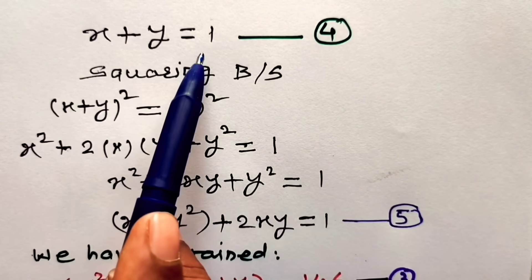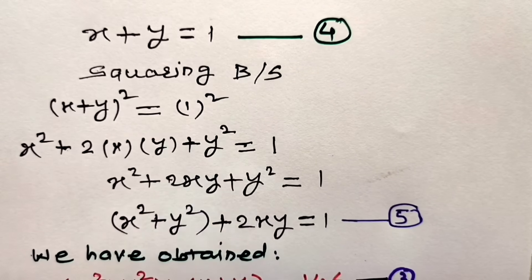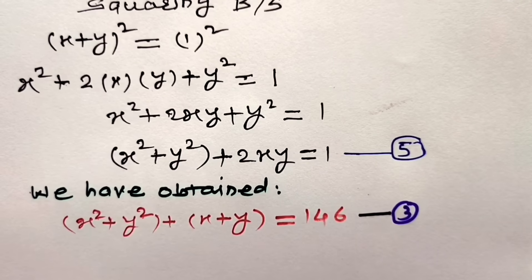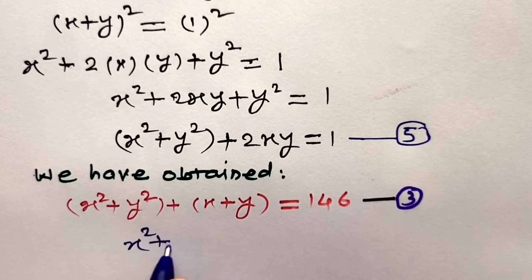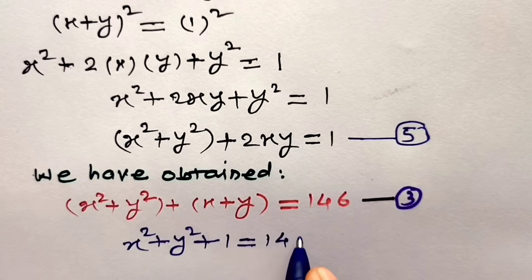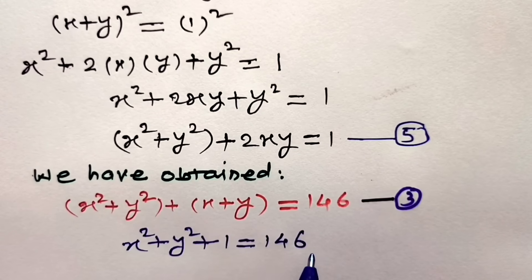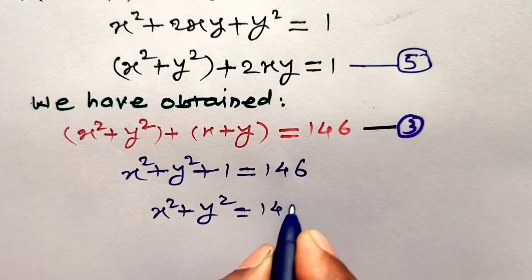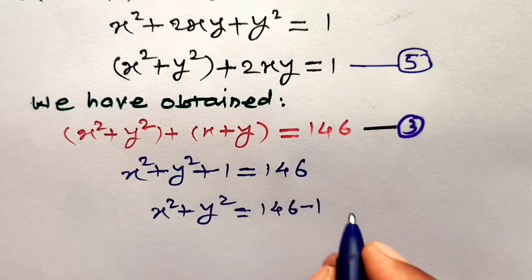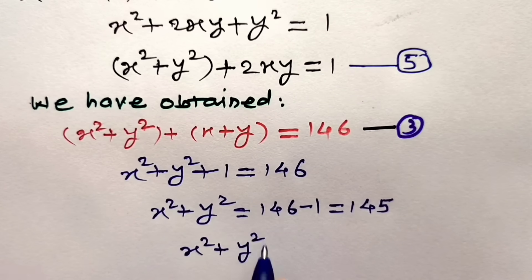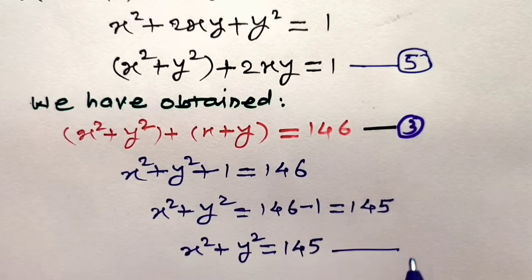Equation 4 is x plus y equals 1, and we put this into equation 3. Equation 3 becomes: x squared plus y squared plus 1 equals 146. Taking 1 to the right hand side, x squared plus y squared equals 146 minus 1, which equals 145. Consider this as equation number 6.